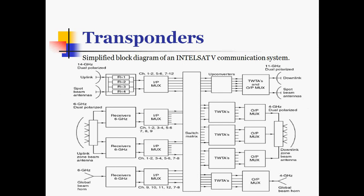In this diagram, a 14 GHz dual polarized uplink frequency is used with spot beam uplink antennas, followed by a number of receivers and an input multiplexer. Input multiplexers are allocated to channels 1, 2, 5, 6, 7, and 12 respectively. Additionally, there is a 6 GHz dual polarized uplink with zone beam antennas, global beam antennas, all connected to a switch matrix with input multiplexers again allocated to different channels.